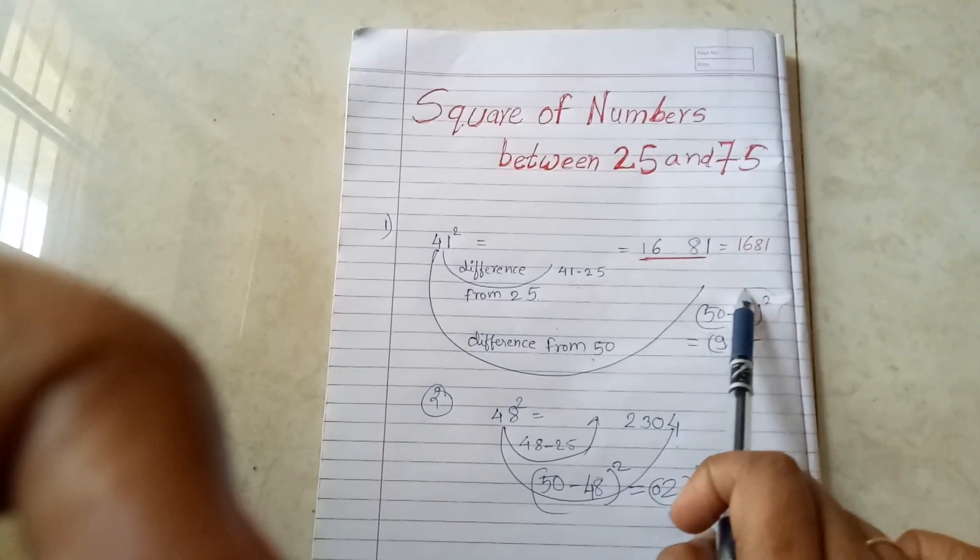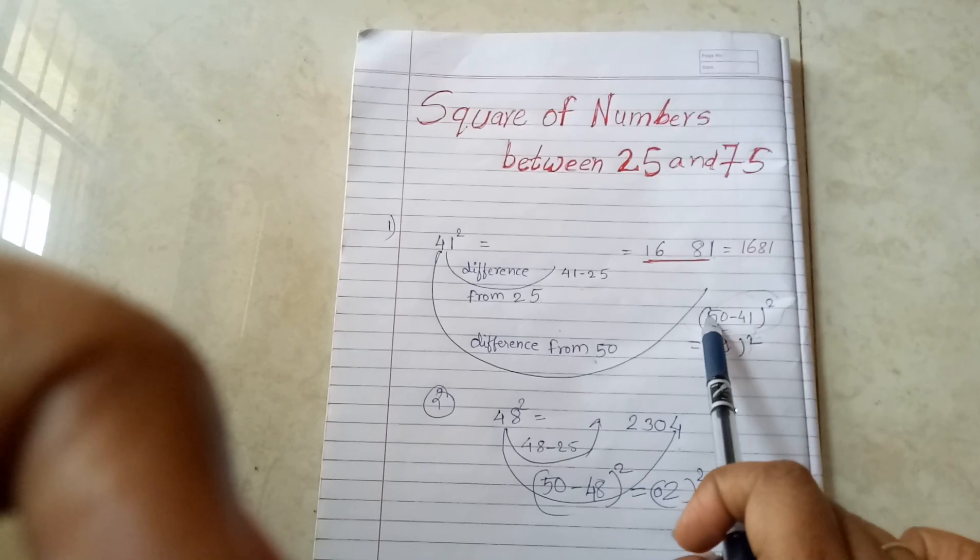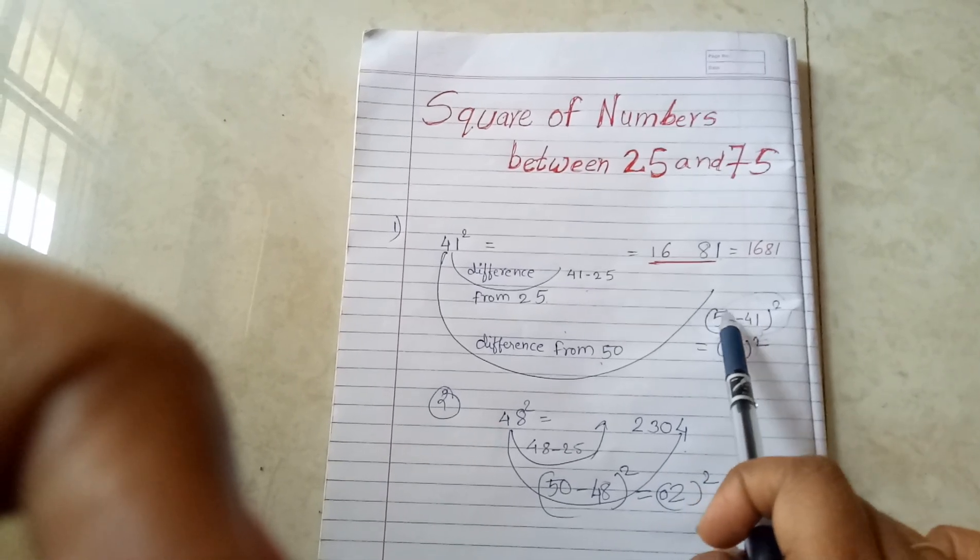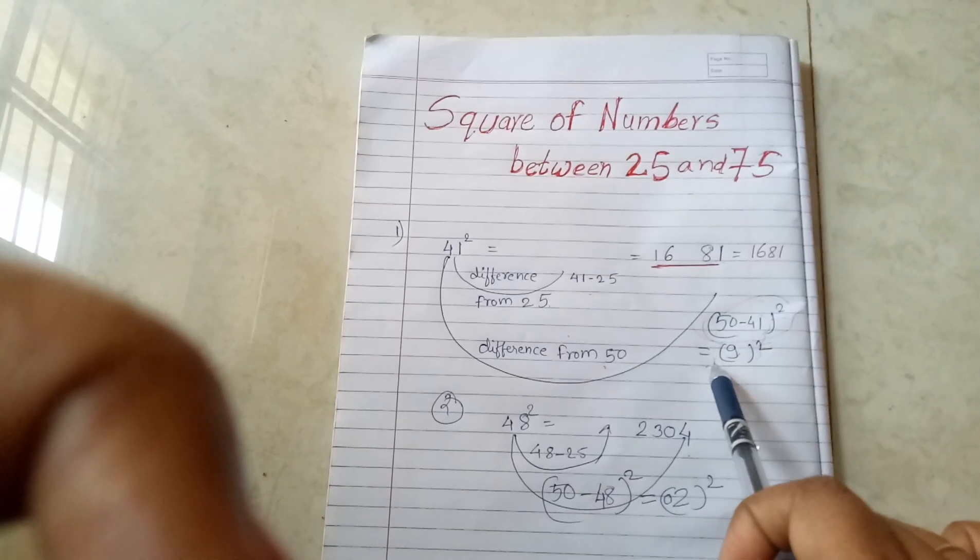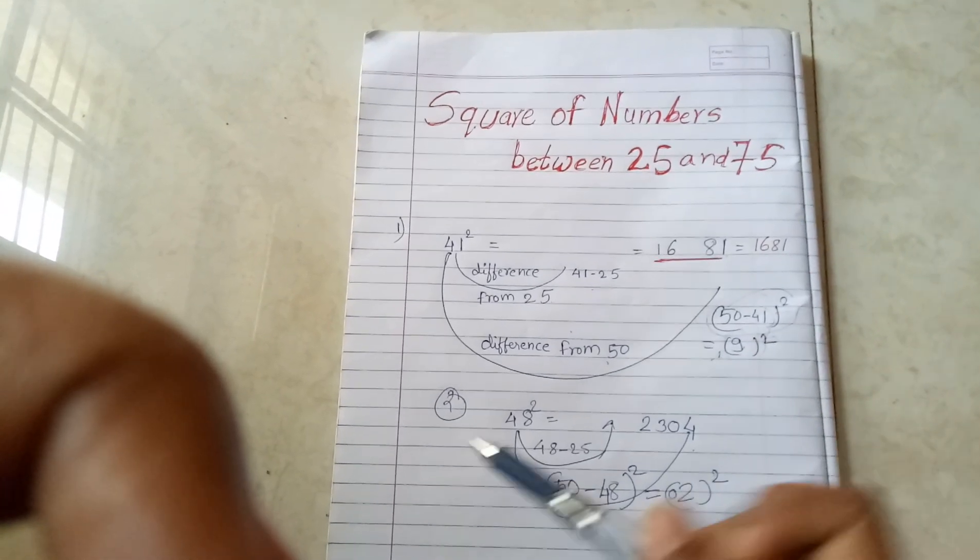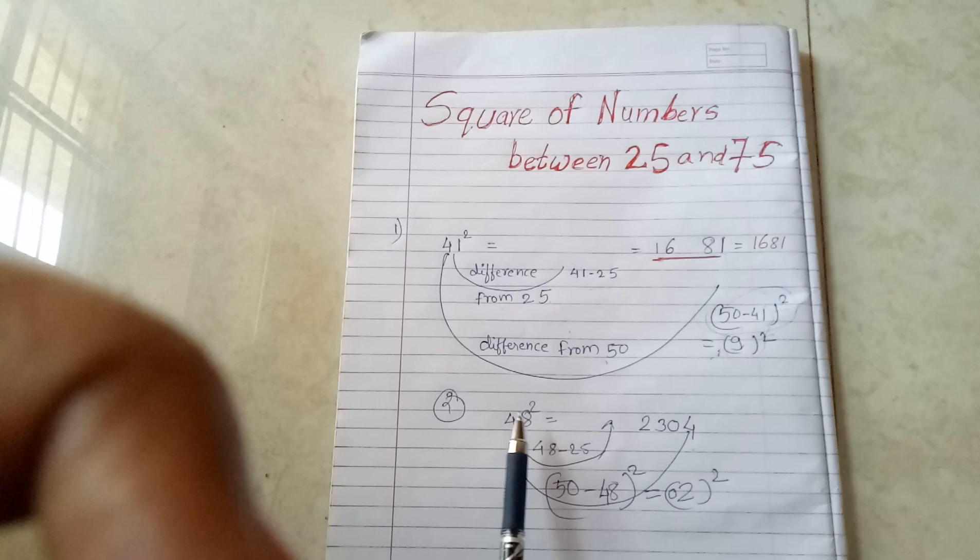In this, you can also take 41 minus 50. Either you can take 41 minus 50 or 50 minus 41. As it is a square, there will be no difference in the answer.